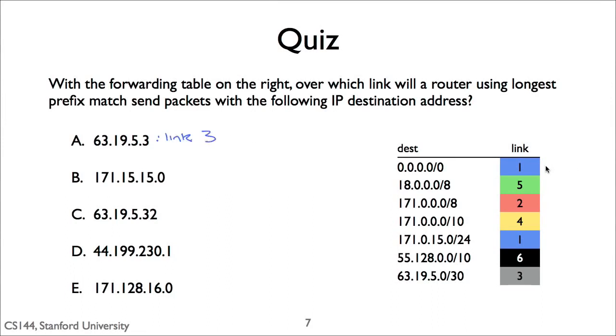The answer for 63.19.5.3 is link 3. 63.19.5.3 matches two prefixes: the default route and prefix 63.19.5.0. The prefix is 30 bits long, and 63.19.5.3 differs in only the last two bits. Slash 30 is a longer prefix than slash 0, so the router will pick link 3.